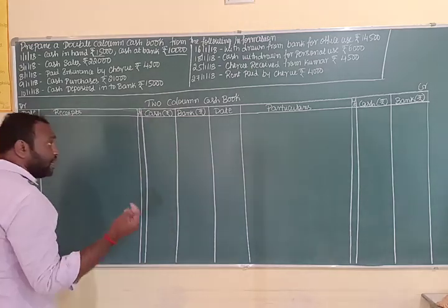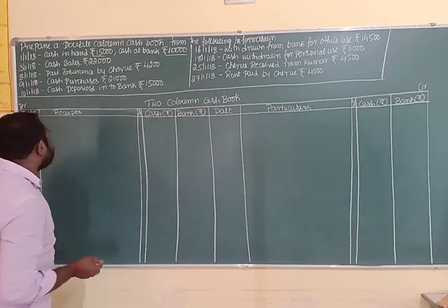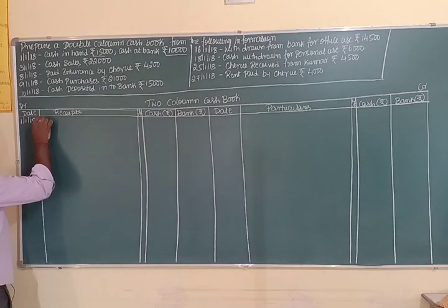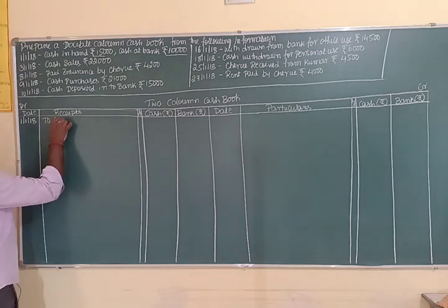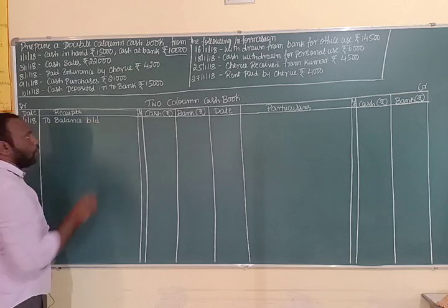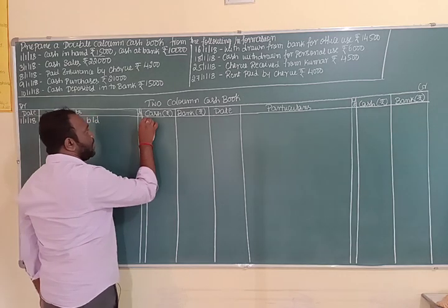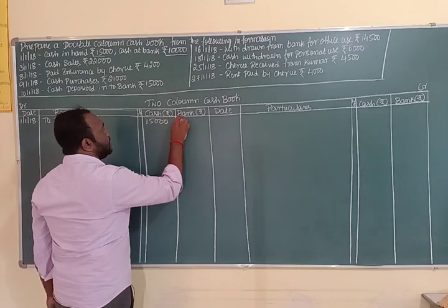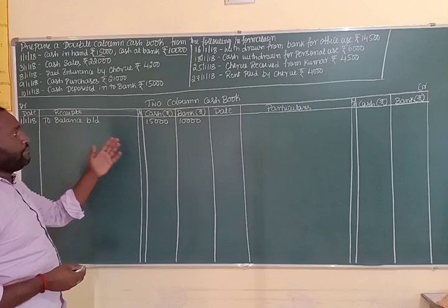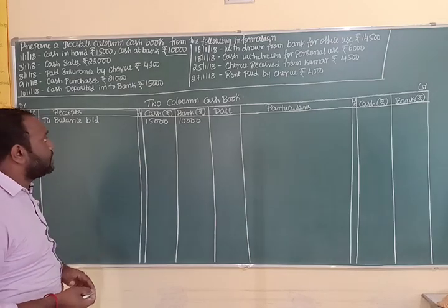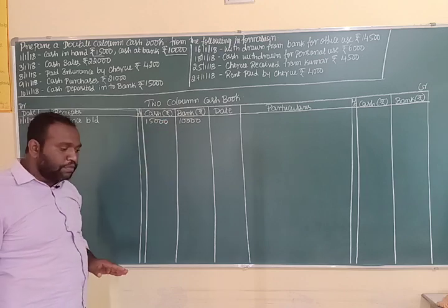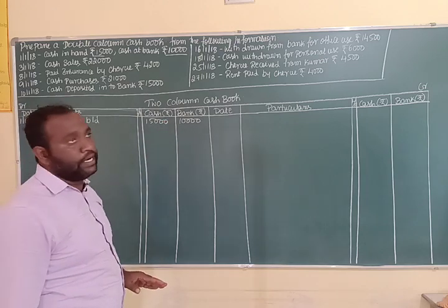These are opening balances on 1st January 2018. Since these are receipts of the company, they go on the debit side as 'To Balance b/d.' In the cash column we enter 15,000 and in the bank column we enter 10,000.